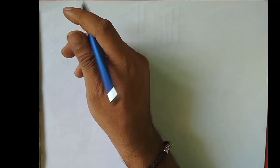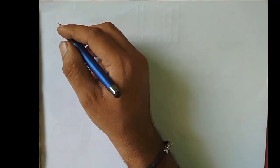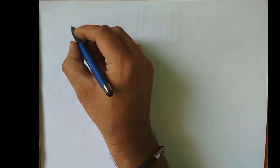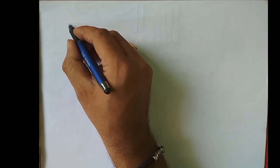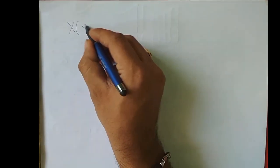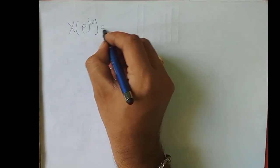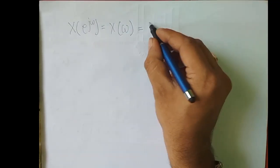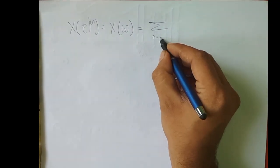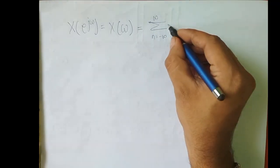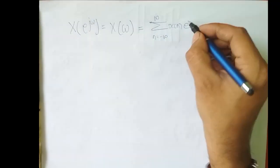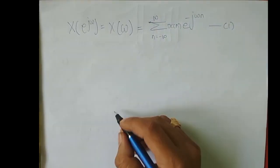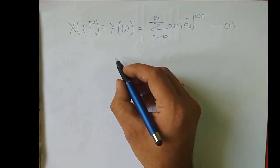Welcome to the second lecture of Module 1. In Lecture 1 we discussed two equations. The first equation was the DTFT equation: X(e^{jω}), which in short we call X(ω), is equal to the summation from n = -∞ to ∞ of x[n] e^{-jωn}. We call this Equation 1.